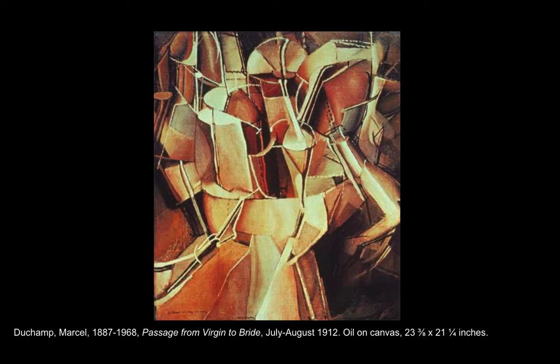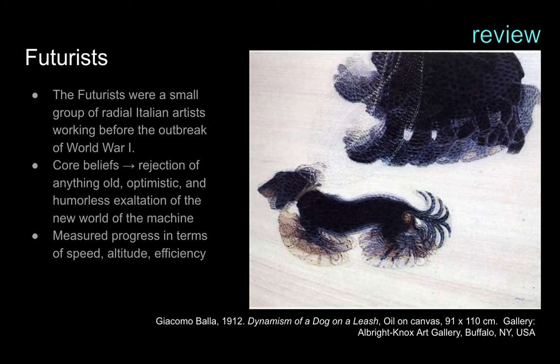In 1912, Duchamp spent the summer making paintings of machines that he created. The Passage from Virgin to Bride, seen here, represented the body of a woman in mechanical terms with a system of elaborate anatomical plumbing symbolizing the coital act. Duchamp had seen a show of Futurist works in Paris in 1912, and you can see a connection between his work and this one by Giacomo Balla. Yet, unlike the Futurists, Duchamp's works expressed disillusionment and satire.